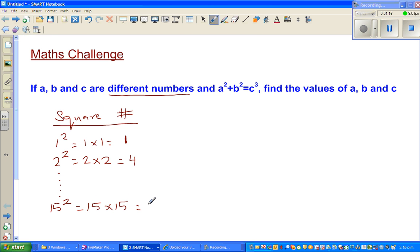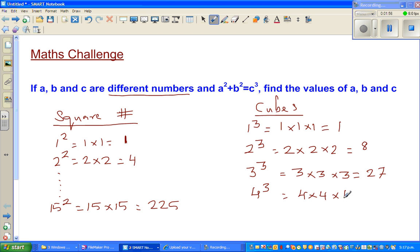Now cubic numbers or cubes. 1 cubed is 1 times 1 times 1 which is 1, so 1 is both a square and a cube number. 2 cubed is 2 times 2 times 2, which is 8, not 6. 3 cubed is 3 times 3 times 3 which is 27. 4 cubed is 4 times 4 times 4 which is 64. 5 cubed is 5 times 5 times 5 which is 125.